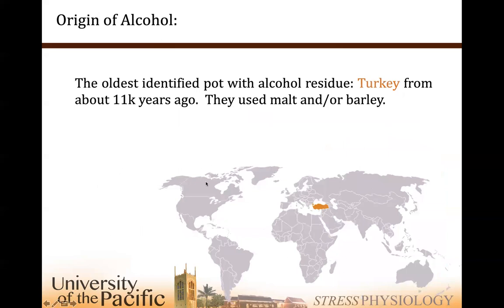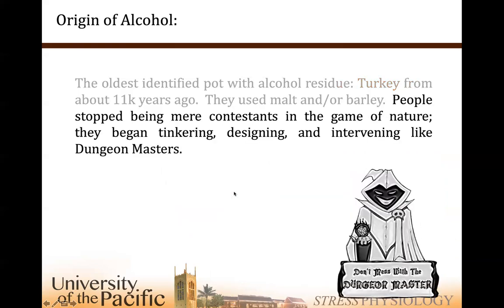The earliest identified pot with alcohol residue found to date was in Turkey — the most northern part of the Middle East — about 11,000 years ago. Malt, maybe barley, was going in, those carbohydrates would get a little bit weird. People didn't know what was causing this, didn't know what fermentation really was or how to control it. For the longest time, the whole living animal kingdom was just participants in nature trying not to die.